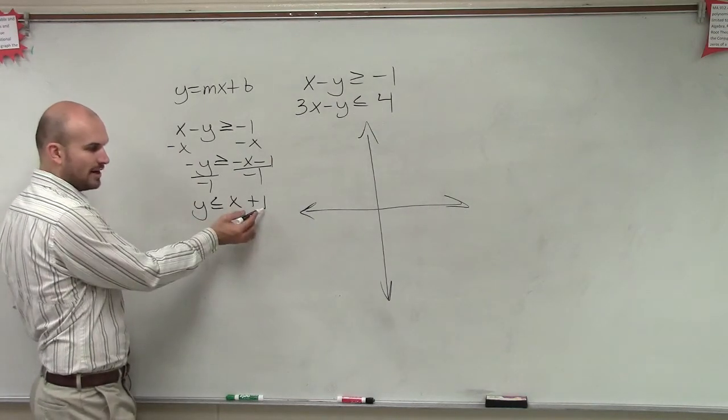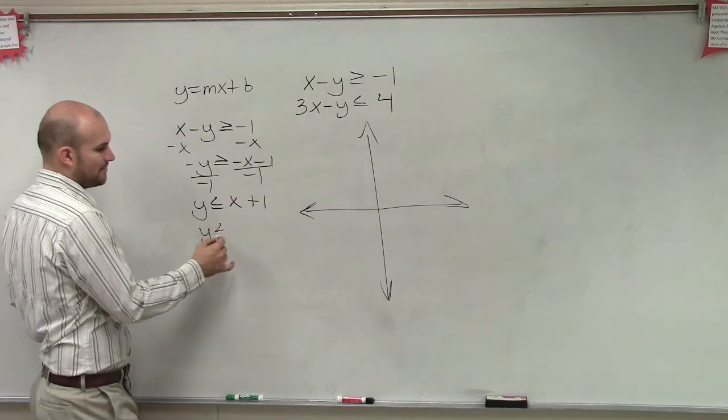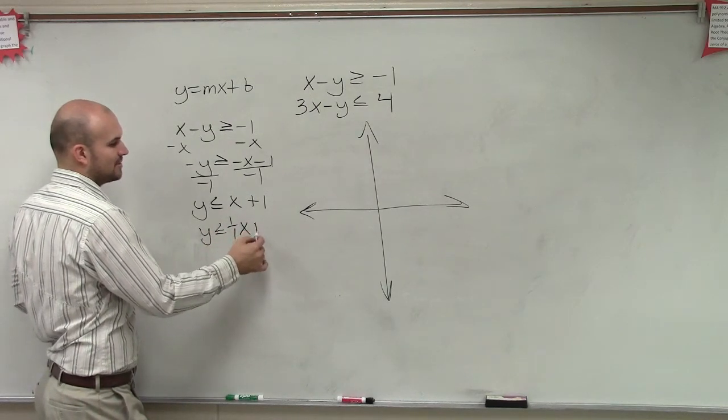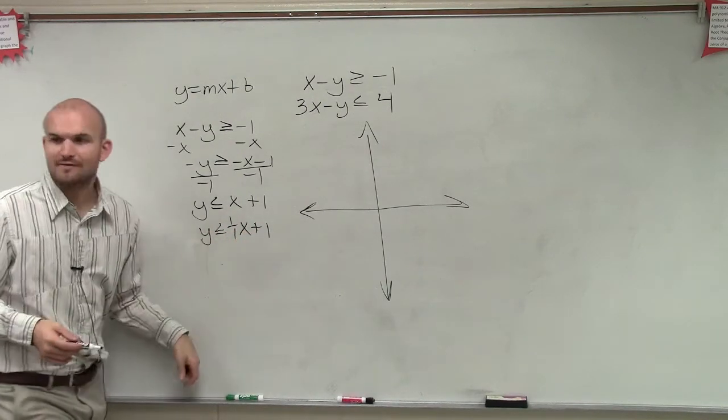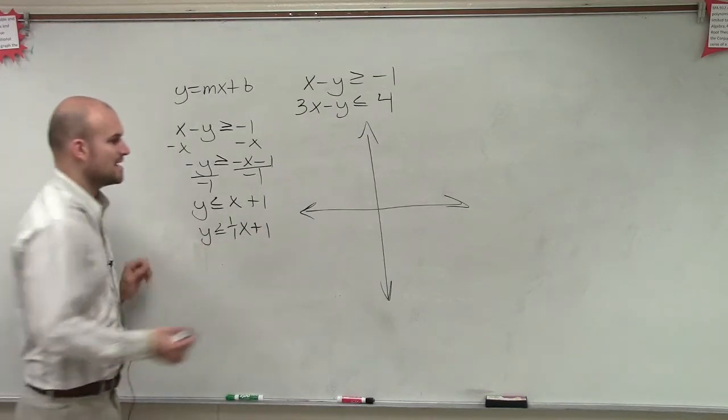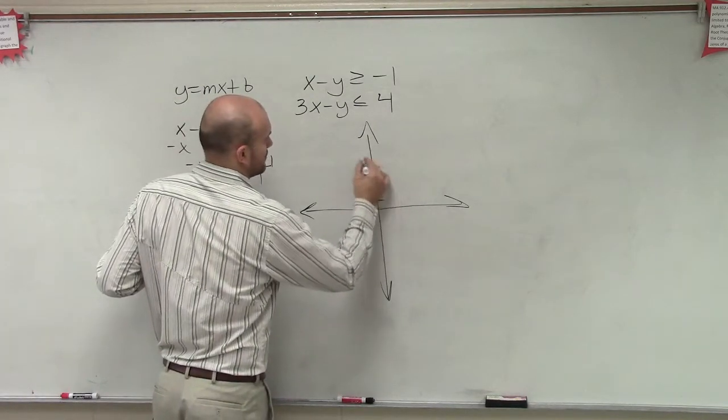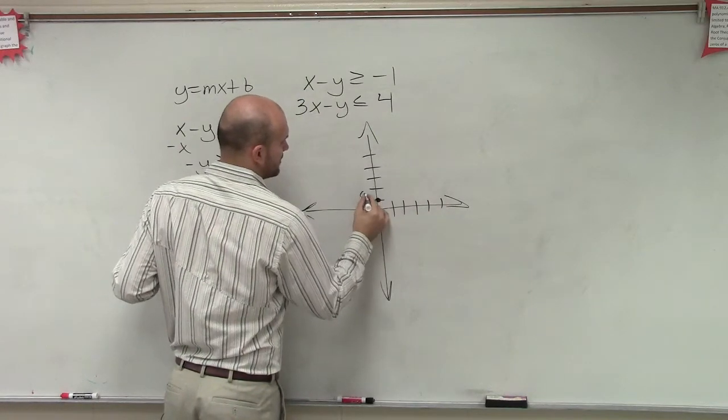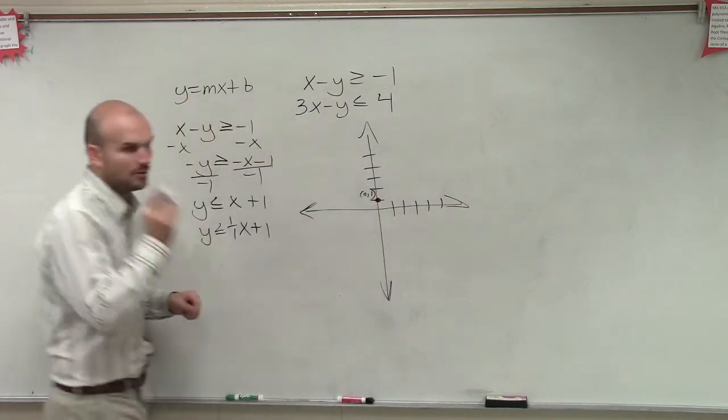Now what is our y-intercept? 1, and our slope is what? 1 over 1x plus 1, OK? So let's graph this equation. Y-intercept is at 1. So I'm going to go to 1. And I'm just going to label it 0 comma 1 so you guys can notice, y-intercept.